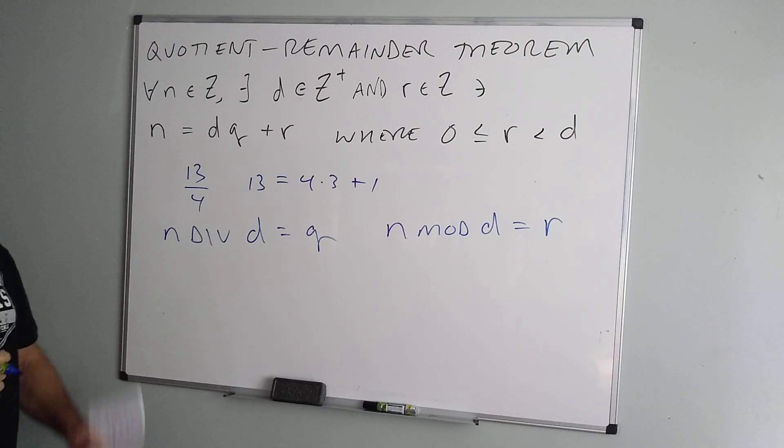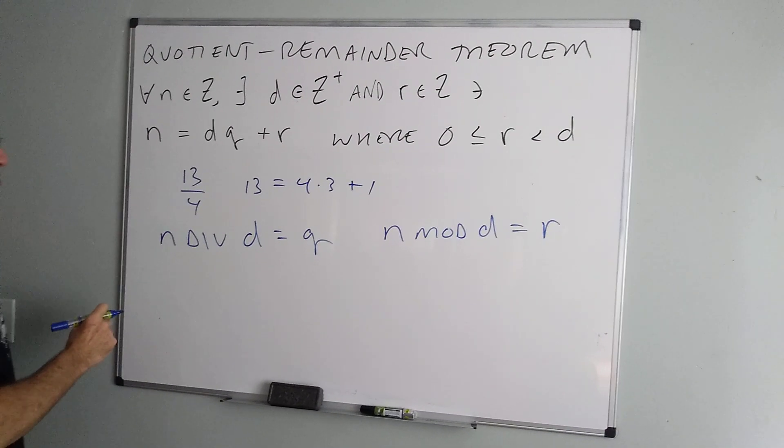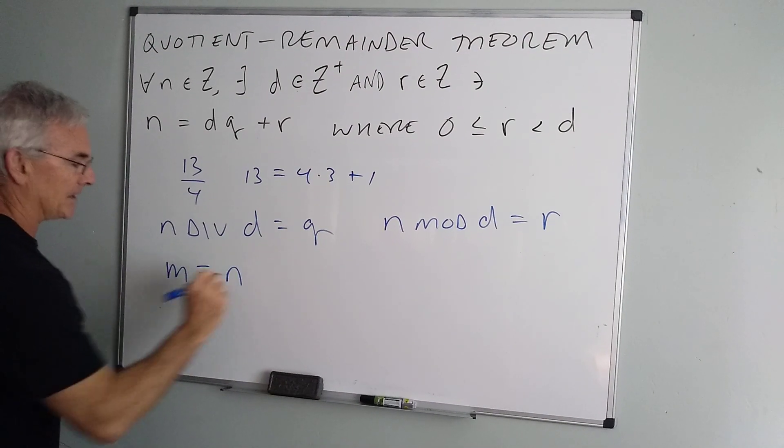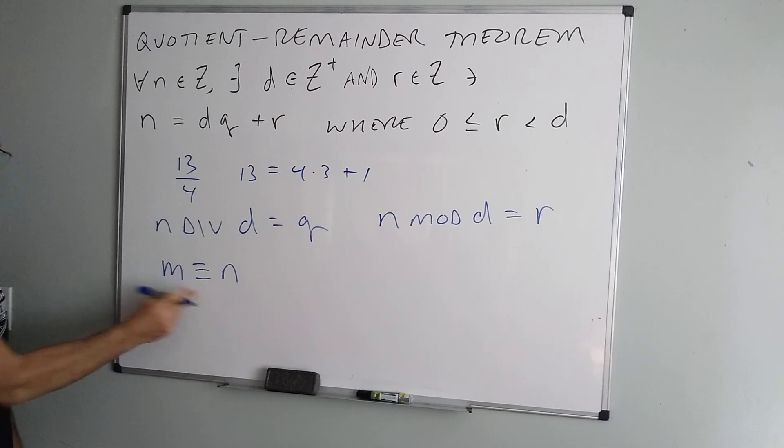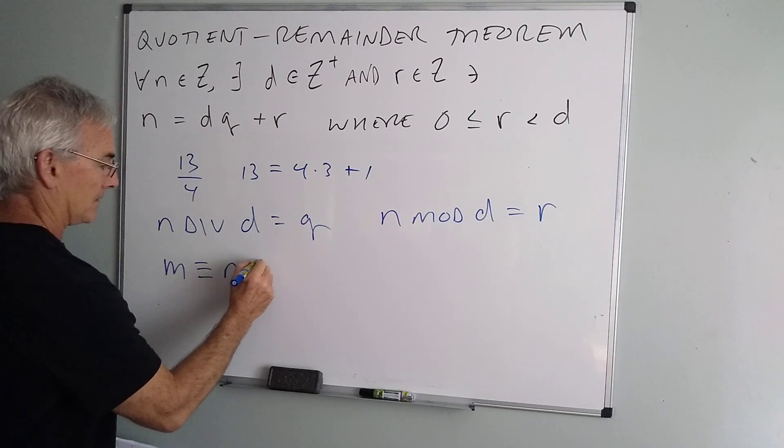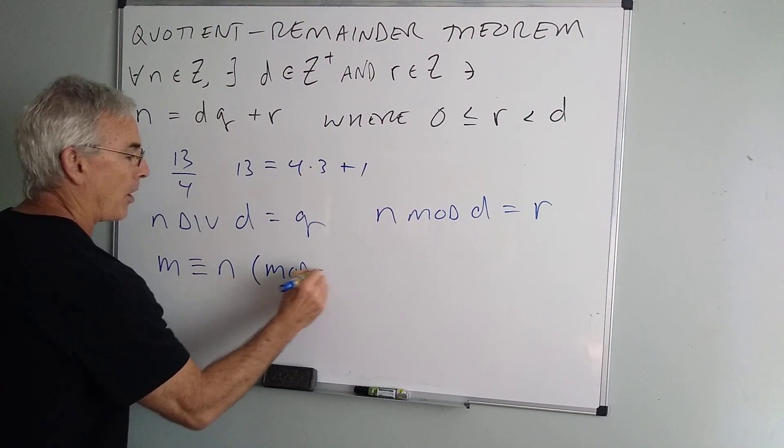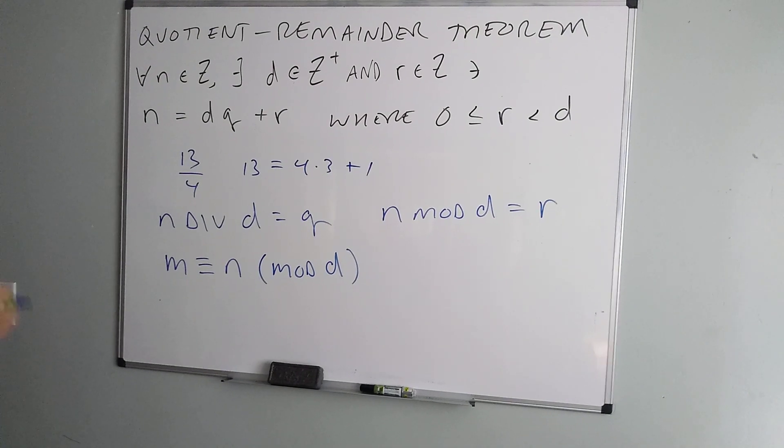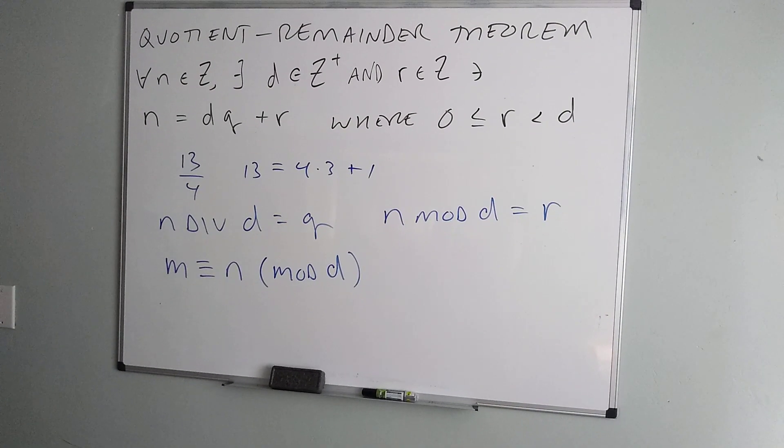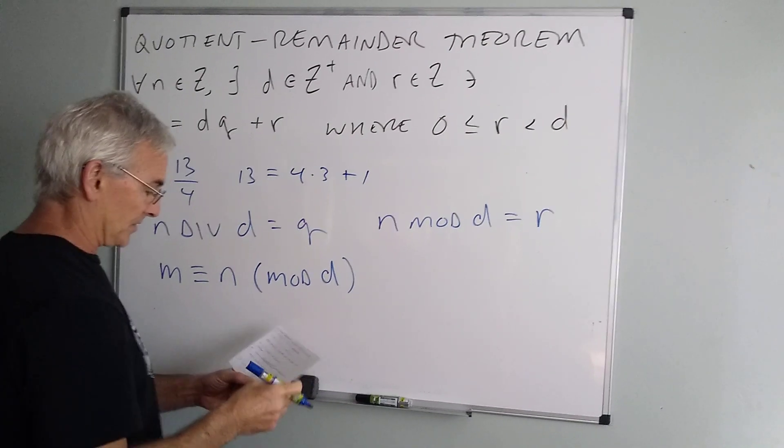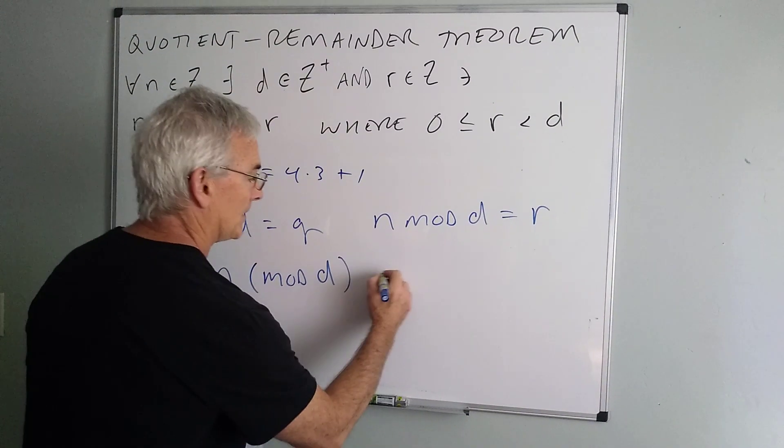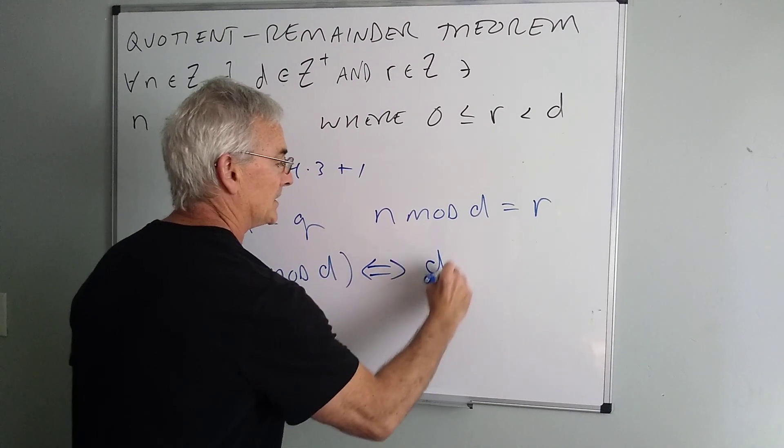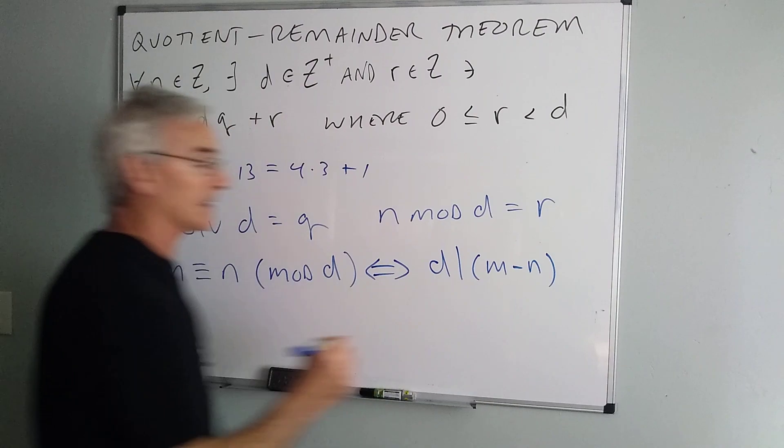These will form what we call equivalence classes, and we say in general two numbers m and n are equivalent. The three bars in this case mean equivalent mod d for any number d. So that would be kind of like saying we're going to count by the same amount to get to the next number. This statement is also equivalent to d divides the difference of m and n.